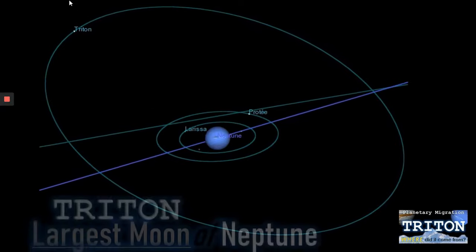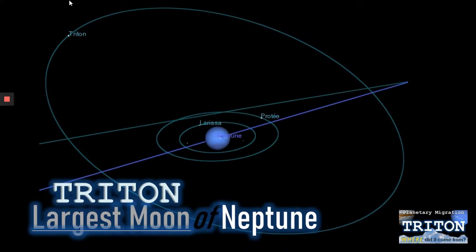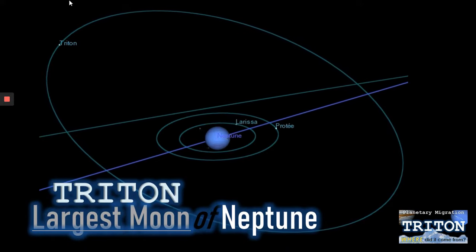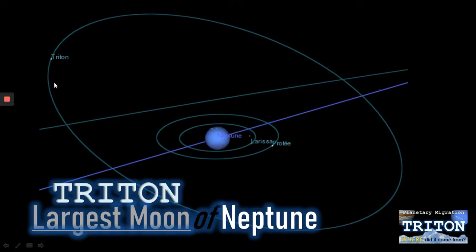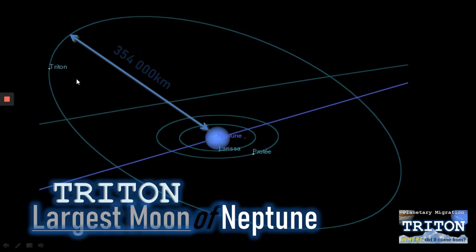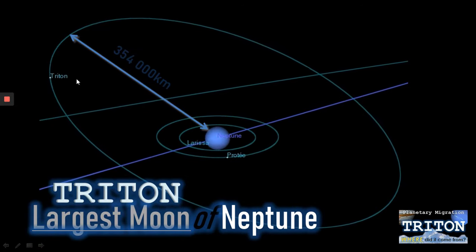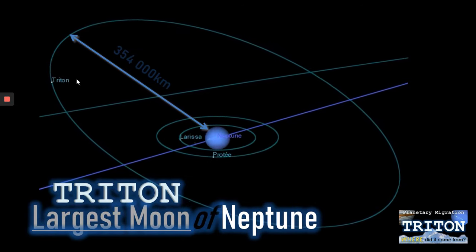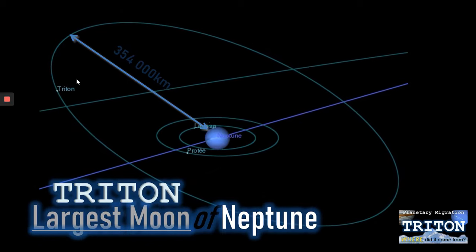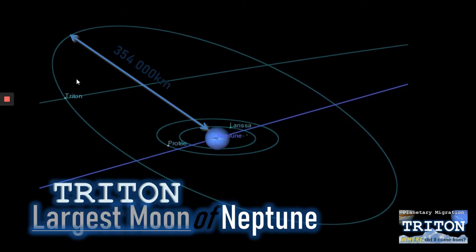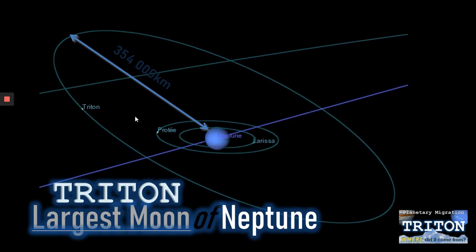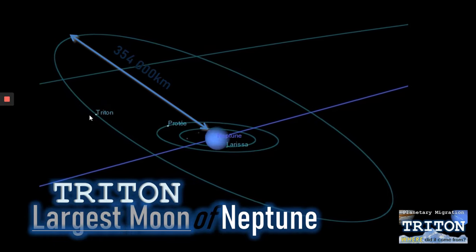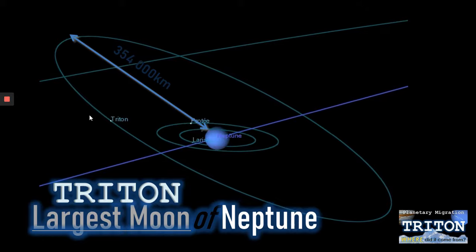Here we can see a depiction of the Neptunian system, with Neptune in the centre and Triton, its largest moon. We can see it orbiting in a retrograde fashion at around 354,000 kilometres, which is roughly equivalent to the Earth–Moon distance. But why does Triton orbit in such a strange way, as opposed to the other satellites of Neptune like Larissa, Proteus, or Nereid?